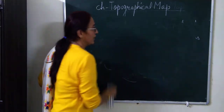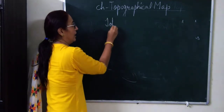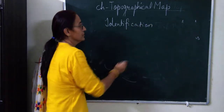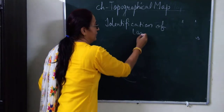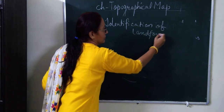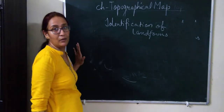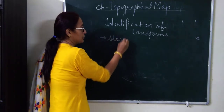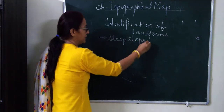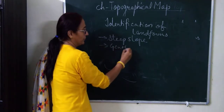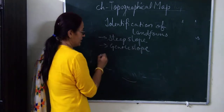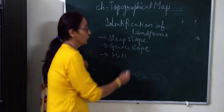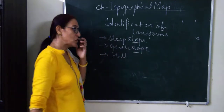Next we have to learn about identification of landforms. We can identify different landforms on the basis of contour. As per our syllabus, there are three landforms to identify: steep slope, gentle slope, and hill.